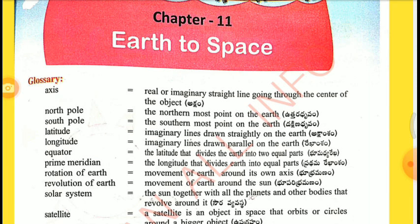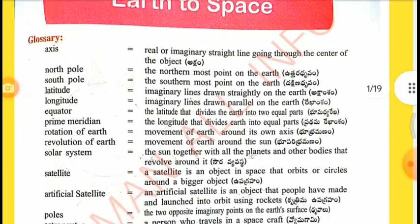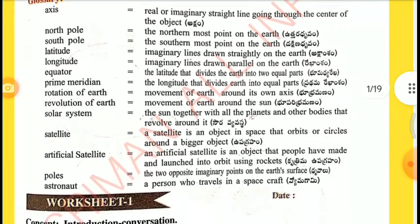Rotation of earth: movement of earth around its own axis. Revolution of earth: movement of earth around the sun. Solar System: the sun together with all the planets and other bodies that revolve around it.